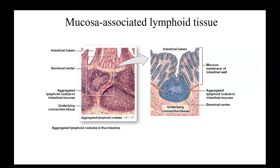With MALT, this is found within the digestive system, the respiratory system, and the reproductive and urinary systems. These sections line those areas — for the intestinal section, that would be the stomach or intestines. You see the lining, the germinal center of the cells, and that's where you're going to have your lymphoid nodules. This is where microorganisms will be taken to be destroyed by the phagocytic cells found in this area.